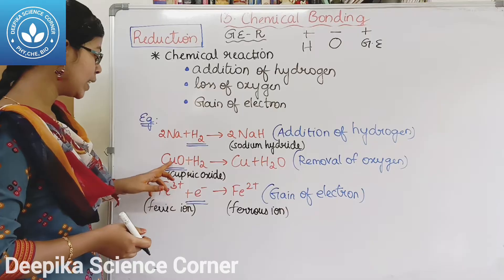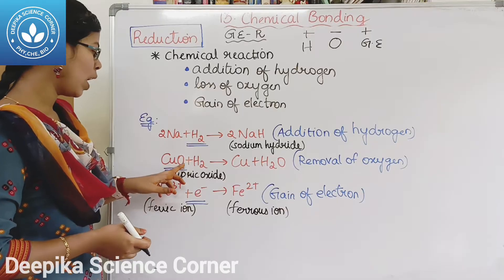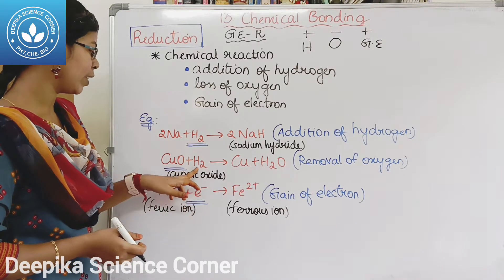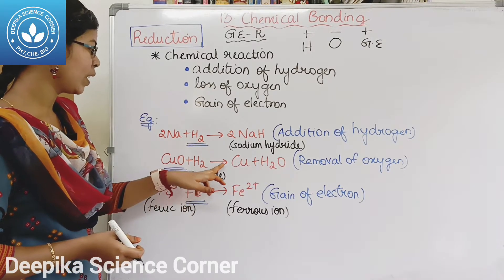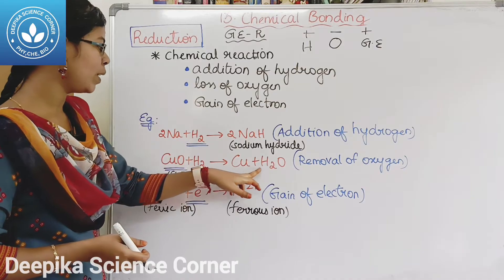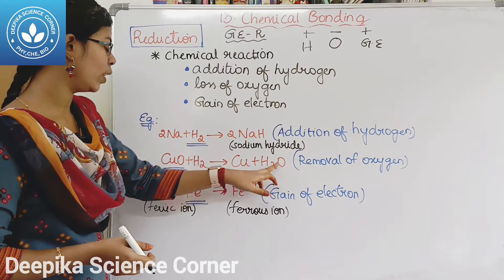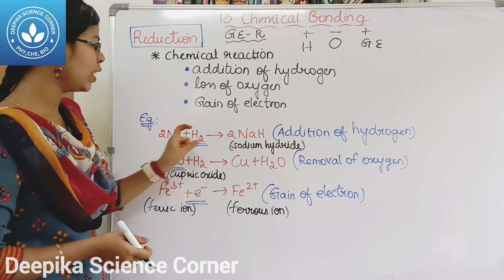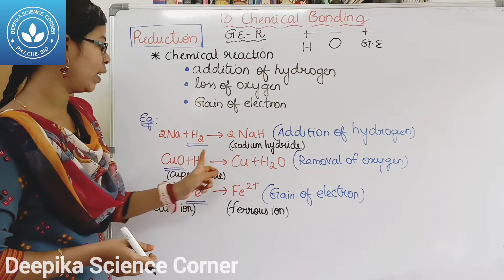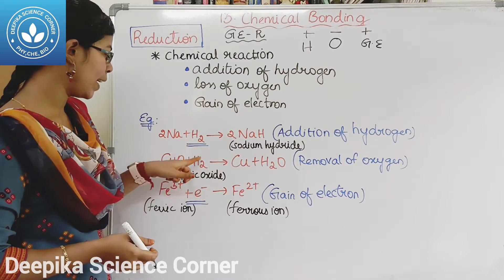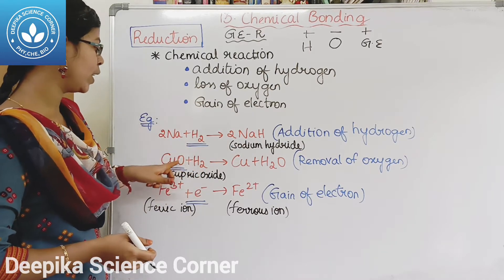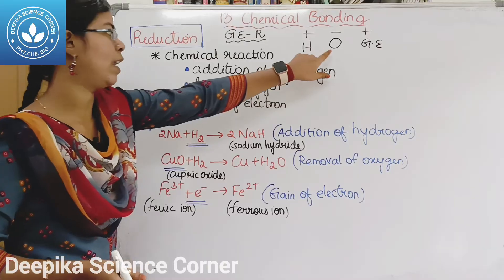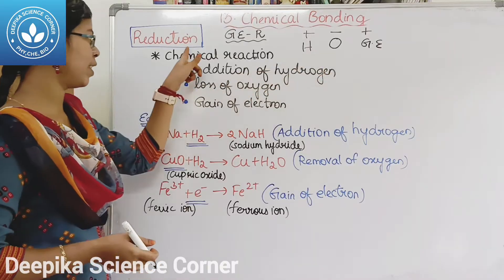Another example: CuO + H2 gives Cu + H2O. The oxygen is removed from copper oxide. So oxygen will be removed — this is the reduction reaction.